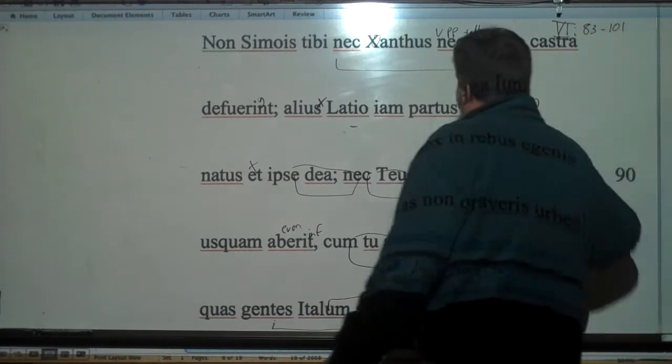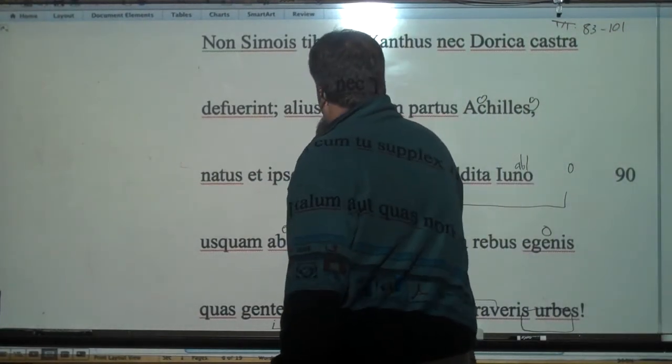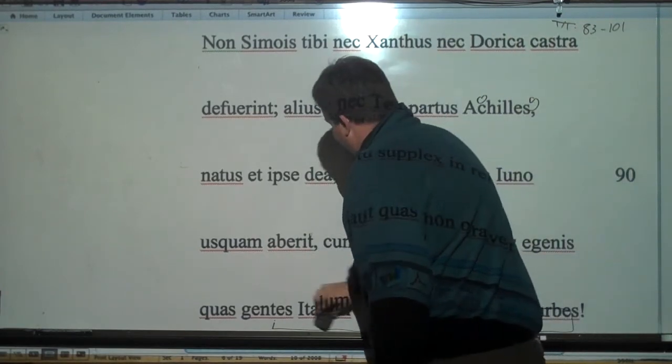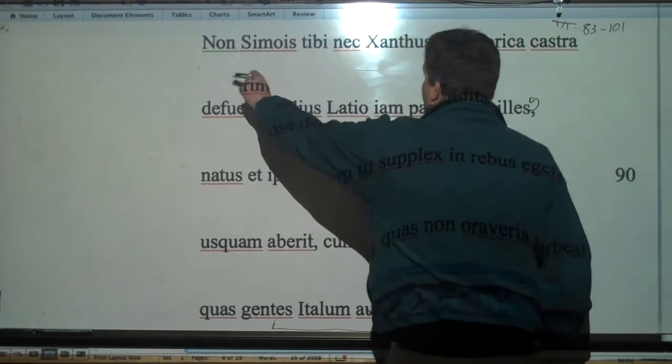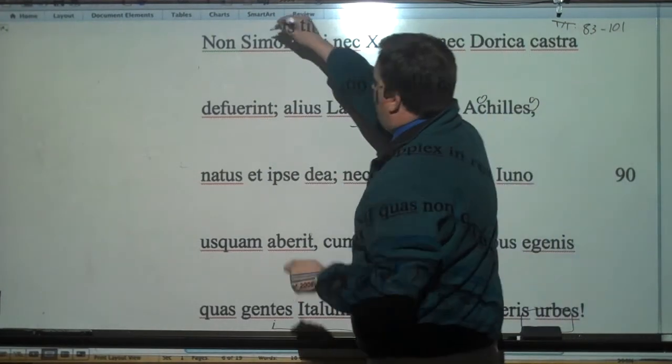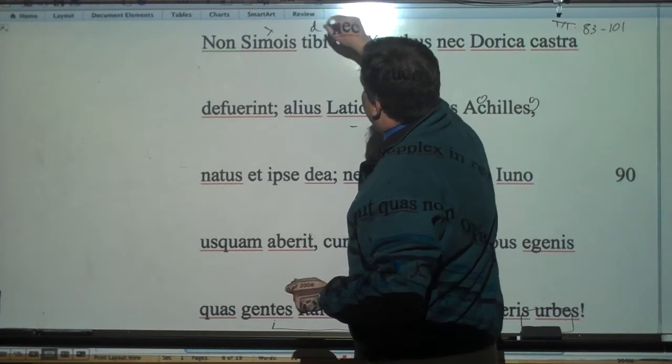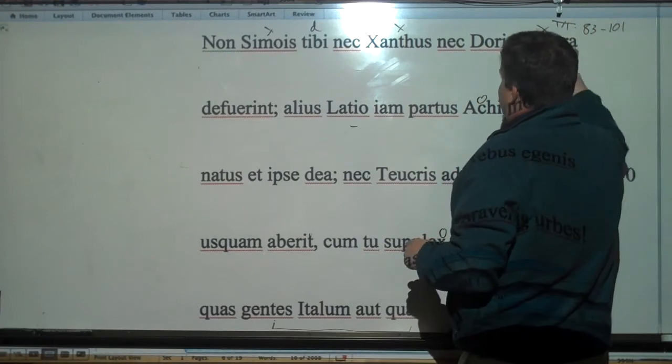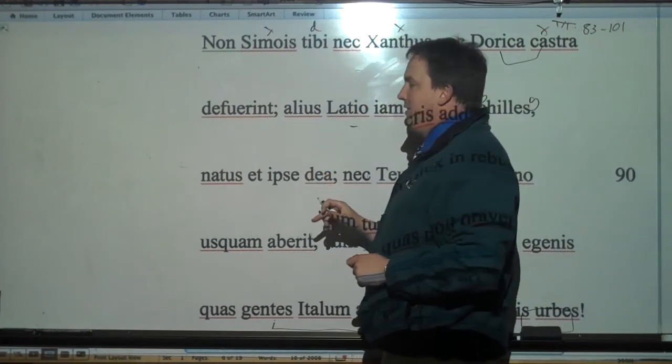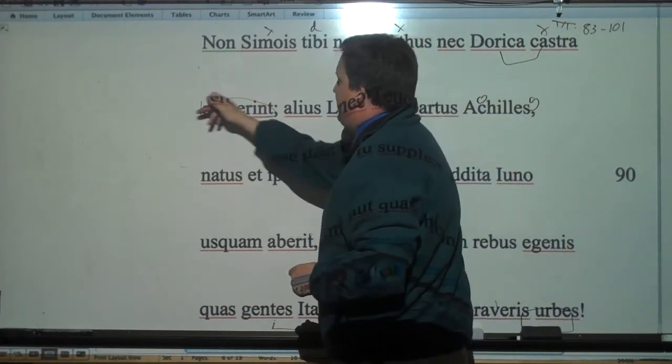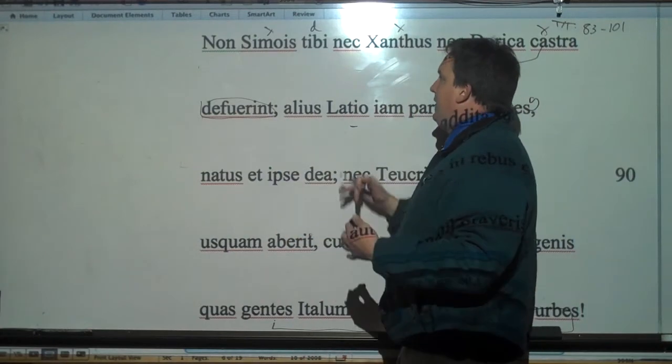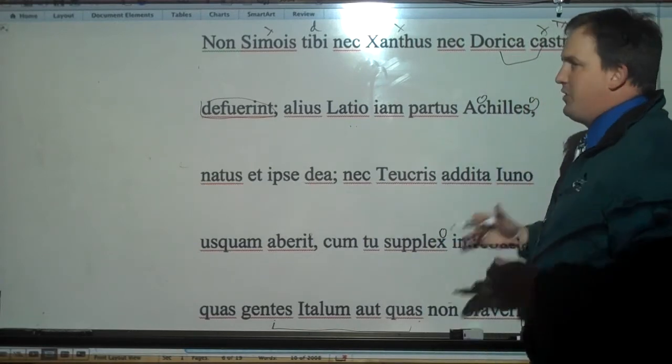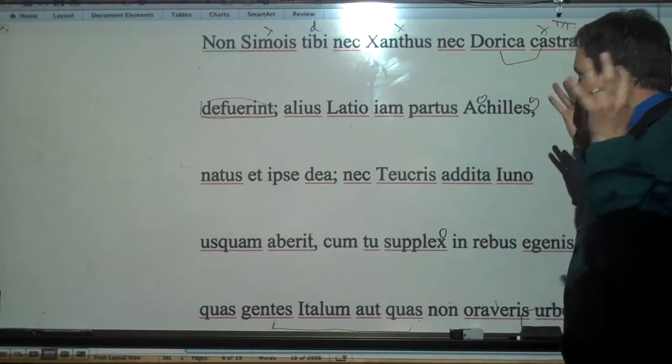And then we have here non Simois. She's making reference here to the Trojan War, saying there's going to be another Trojan War for the Trojans. Nor a Simois for you, nor the Xanthus river, nor the Greek camps, Doric camps, will have been, future perfect - or you can translate this as future, will be absent. So there's going to be another Trojan War.